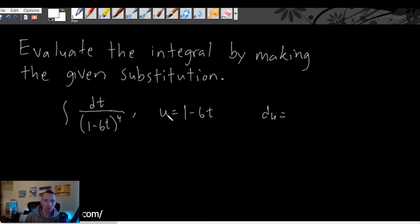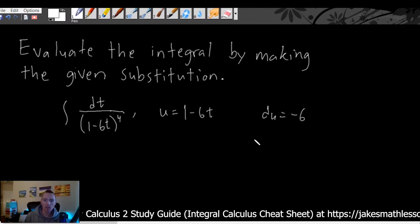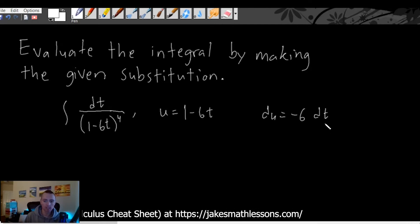So du, if u is 1 minus 6t, we're going to take the derivative with respect to t because t is the variable in this integral equation. We know that because we have a dt right here. So as a result we're taking the derivative with respect to t of u in order to find this. Well the derivative of one, of a constant, is always going to be zero and then the derivative of minus 6t is just going to be minus 6. And then when we take the derivative with respect to t in these U substitution problems we then need to add on a dt in here as well.